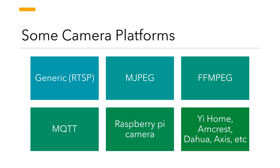Here are some camera platforms. The camera integration supports different platforms. Generic is going to be your RTSP platform - probably your most common if you have an open-source style camera that supports standards. MJPEG is the other really popular one. You can also use FFmpeg as a camera platform, meaning any video stream FFmpeg supports can be pulled in - things off the internet, local video files, whatever. There's also MQTT image servers, Raspberry Pi, and brand-specific platforms like Yi Home and Amcrest, which offer better support including triggers on not only motion but sound.